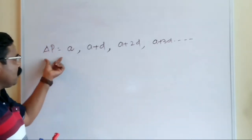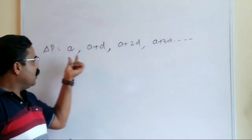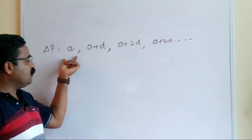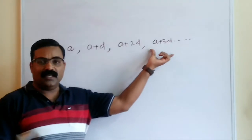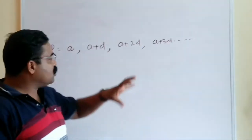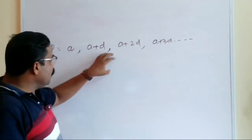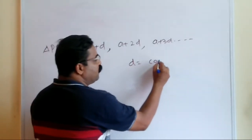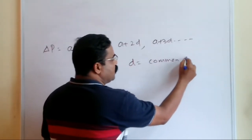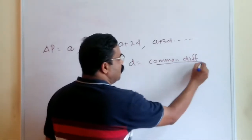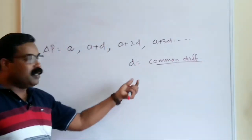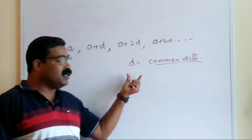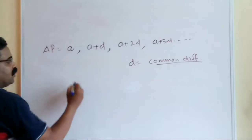In an arithmetic progression, except the first term, all other terms are obtained by adding a fixed constant number to the previous term. That fixed constant 'd' is called the common difference. The common difference can be positive, negative, or even zero.